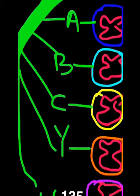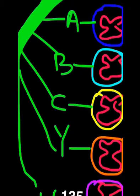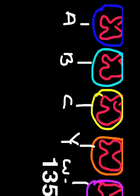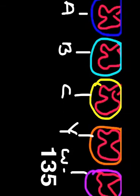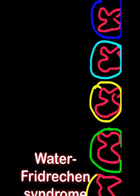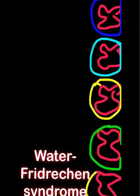Regarding the polysaccharide capsule, there are basically 13 serotypes, but 5 amongst them are most common. These include: A, which is the leading cause of epidemic meningitis; B, which accounts for most diseases in the US; C; Y; and W-135, which is responsible for Hajj-associated disease.